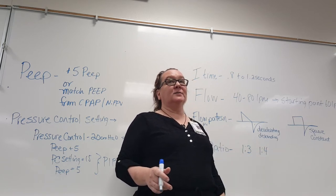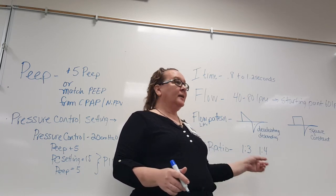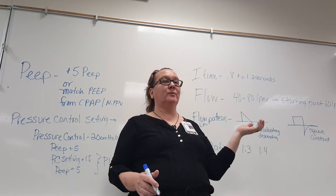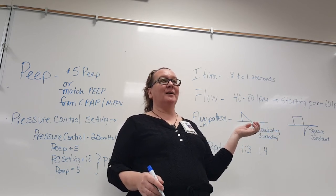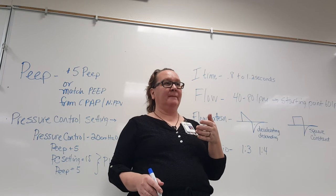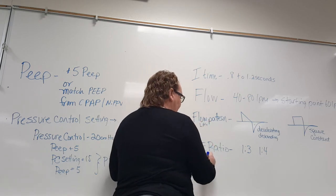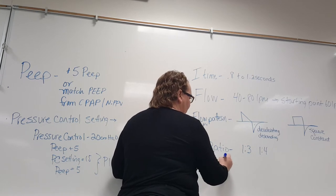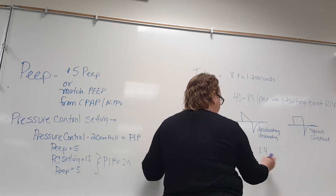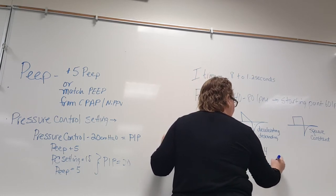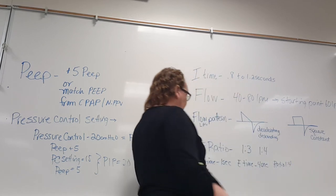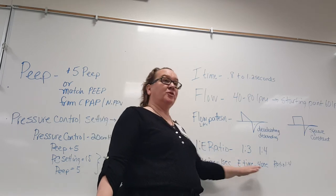So if your I-time is 1 second and your total cycle time is 5 seconds, your E-time is 4 seconds and the ratio is 1:4. If your I-time is 1 second and E-time is 3 seconds, your ratio is 1:3.